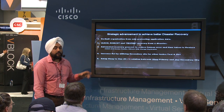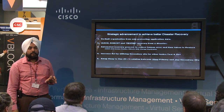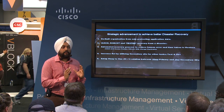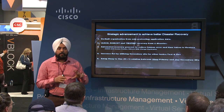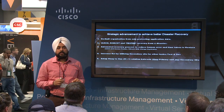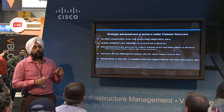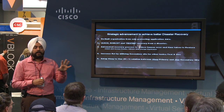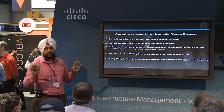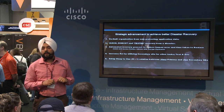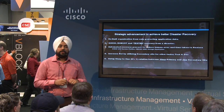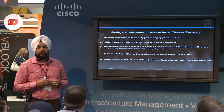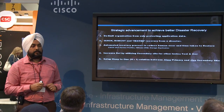You have increased return on investment by using your secondary site as a shared resource — a shared DR for multiple primary sites. You don't have to have one DR for each primary; you can have one DR for five or more primaries. You can have a many-to-one relationship between your primary sites and the DR site.